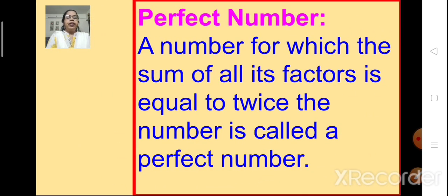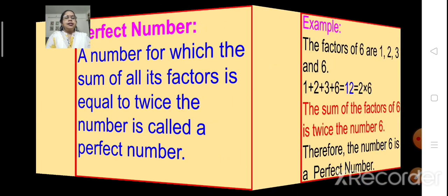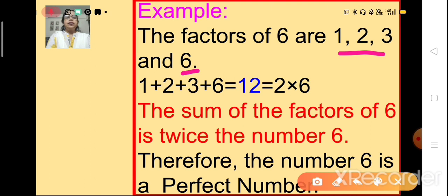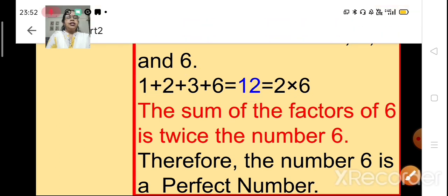Now let's know what are perfect numbers. When we find the factors of a number and add all of them, if the result is twice the number, then it is called a perfect number. So any number for which the sum of all its factors is equal to twice the number is called a perfect number. Let's look at an example. The factors of 6 are 1, 2, 3 and 6. If we sum up all these numbers — 1 plus 2 plus 3 plus 6 — we get 12. And 12 is 2 times 6. So the sum of factors of 6 is twice the number 6, therefore 6 is a perfect number.